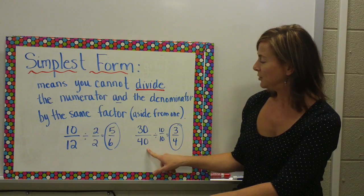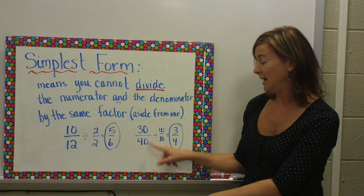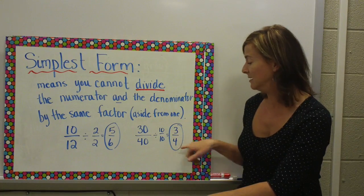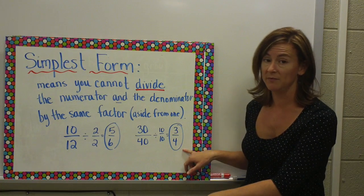Thirty over forty. When I divide both the numerator and the denominator by ten, I get simplest form, three-fourths.